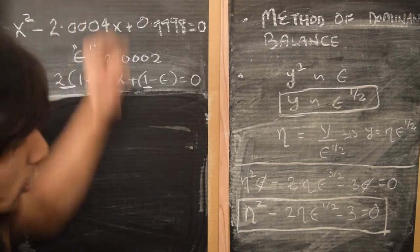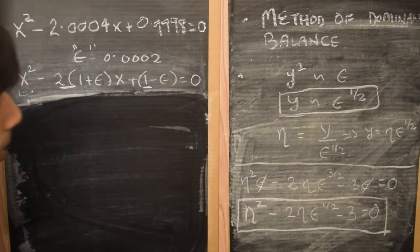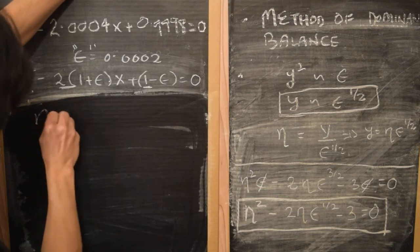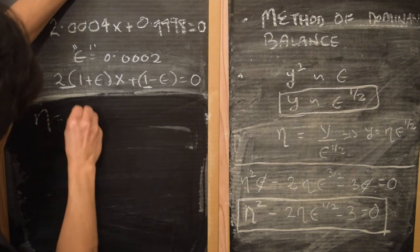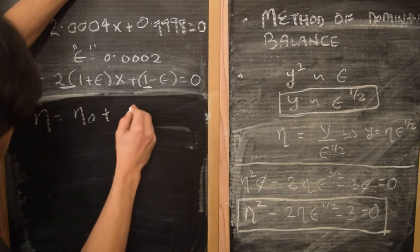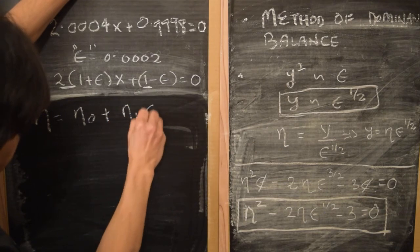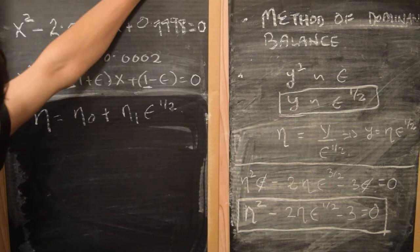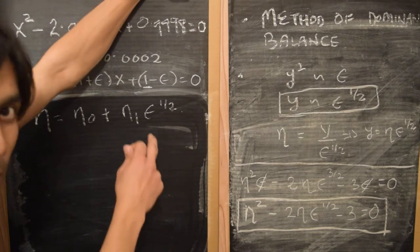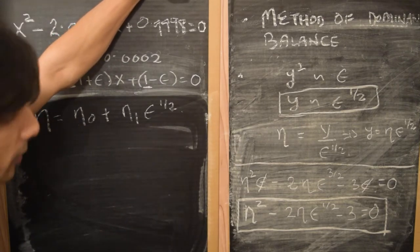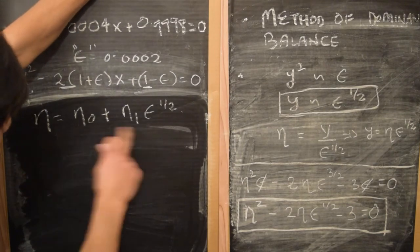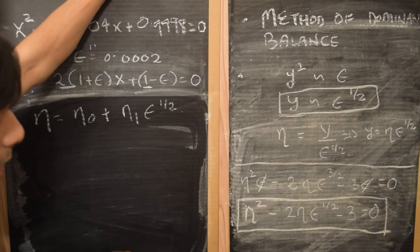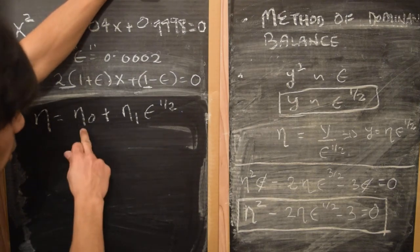We look for a solution for η as: η = η₀ + η₁·ε^(1/2), to leading order in ε. We'll use this as our ansatz for the solution, plug it in, and solve for η₀ and η₁.